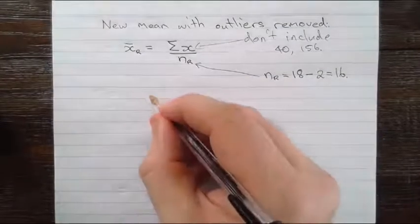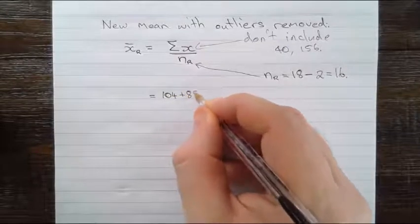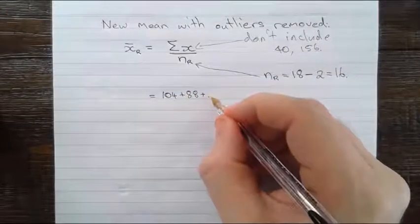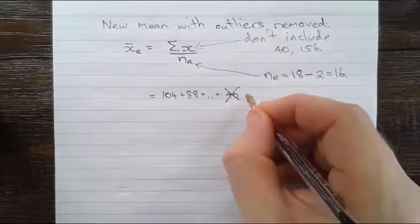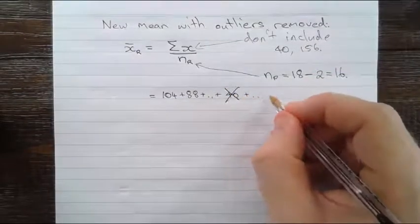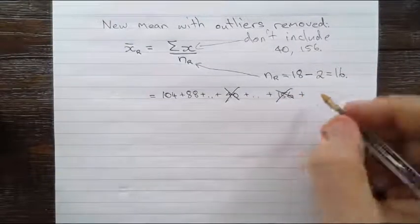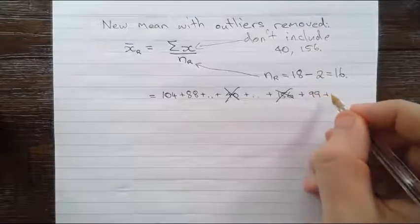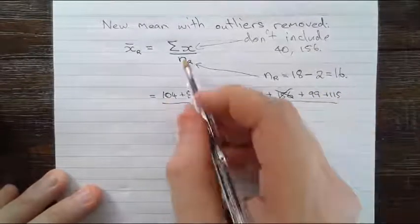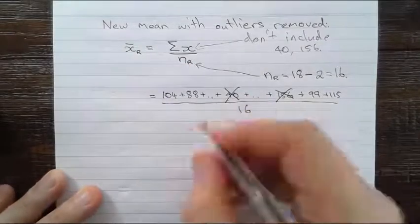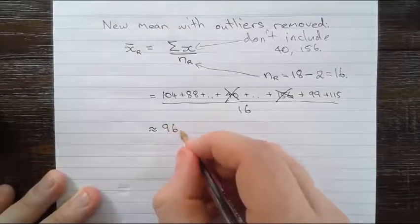So we do that in the same way. We have 104 plus 88 and so on down the line. But remember, not 40, so I'm going to cross that one out. And again, not 156, so I'll cross that one out, all the way down to 99 and 115. We're going to divide by the new n value, which is 16. Going to our calculator, we find that that's approximately 96.4. So the new mean is 96.4.